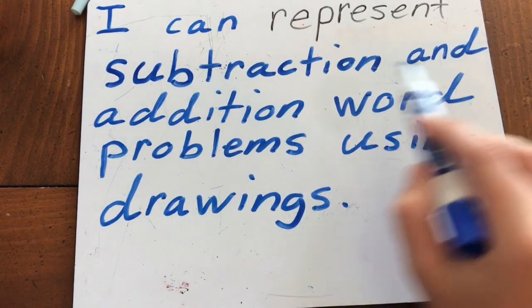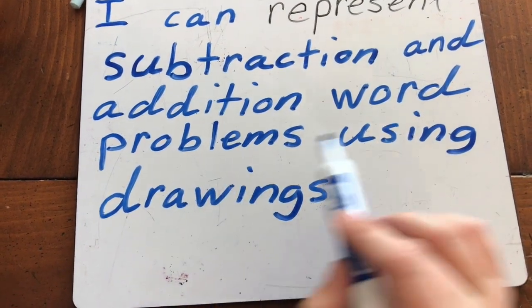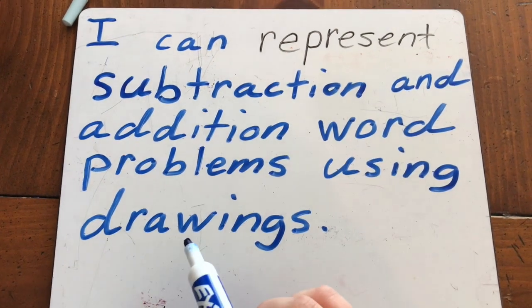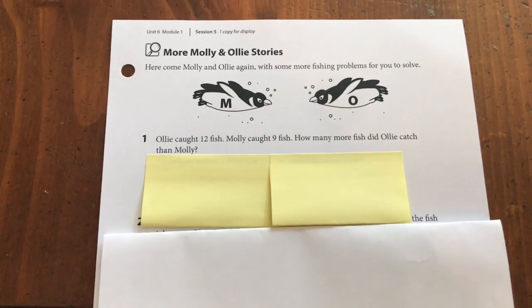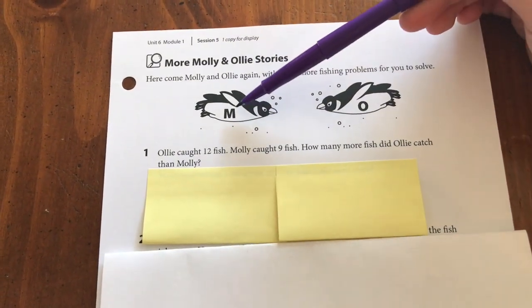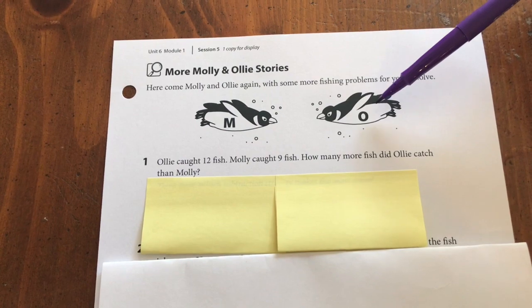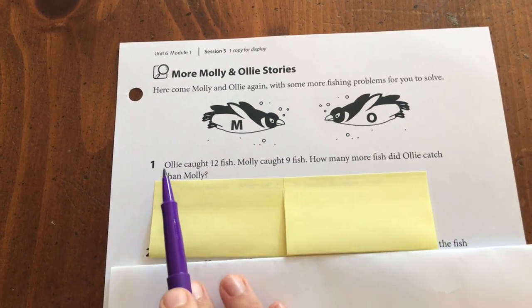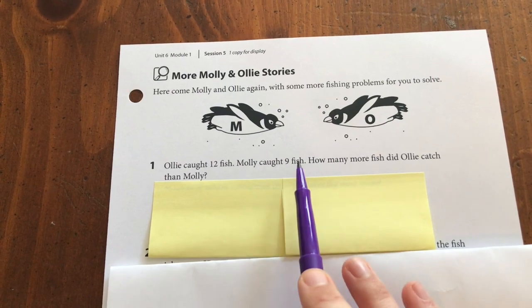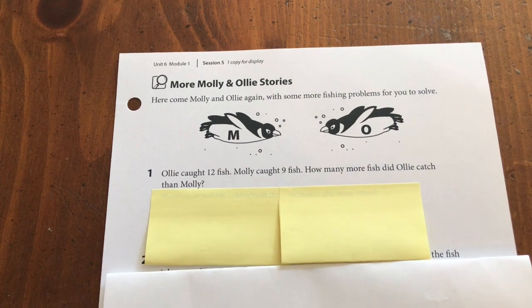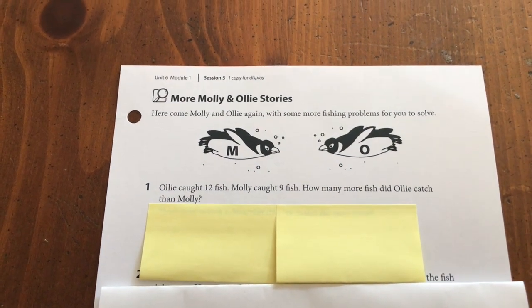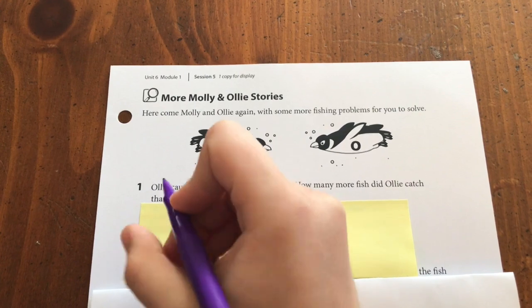This week's learning target is: I can represent and solve addition and subtraction word problems using drawings. So this week we're doing both addition and subtraction word problems. We are back with Molly and Ollie — remember Molly is represented with an M and Ollie is represented with an O. Ollie caught 12 fish, Molly caught 9 fish. How many more fish did Ollie catch than Molly?